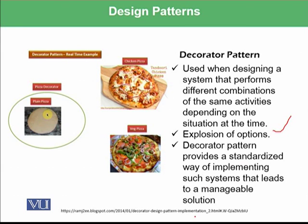For example, we want to make pizza. We have dough available, and there are a number of options — chicken, cheese, vegetables, etc. If we want to make a chicken pizza, we arrange things in the required order to make it from the dough. Similarly, from the same dough, we can make a vegetable pizza by arranging things in that particular order. So that decorates the base.